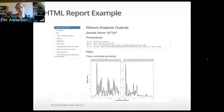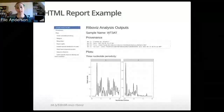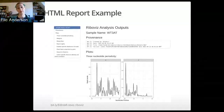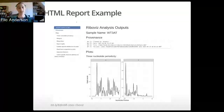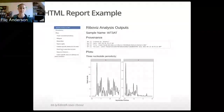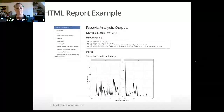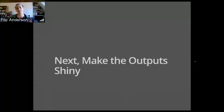As an example, this is what one of our current reports looks like. We have sample information, a little bit of provenance, a lovely table of contents which lets you skip to a particular plot, and the plots themselves. This was our feature successfully added. But what's the next step?